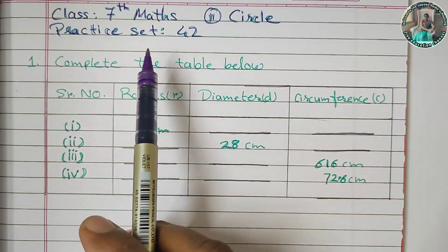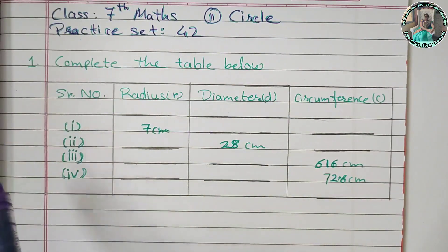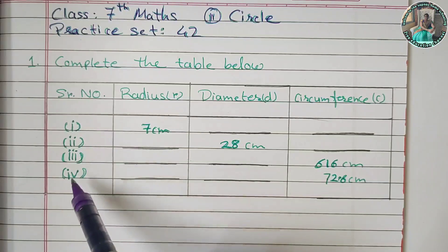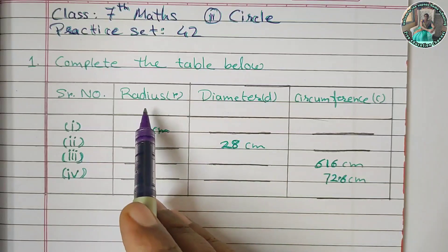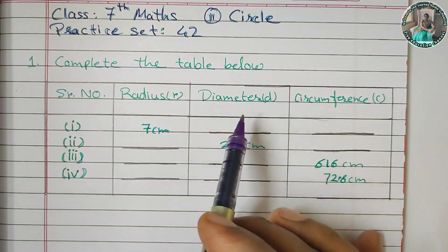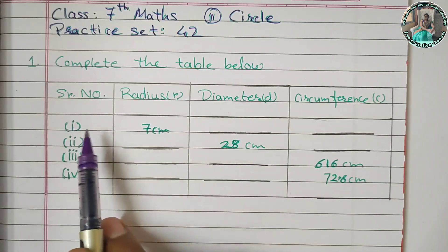If you want to solve practice set 42, you need to solve question 1. In question 1, there are 4 questions. Complete the table below with radius, diameter, and circumference.